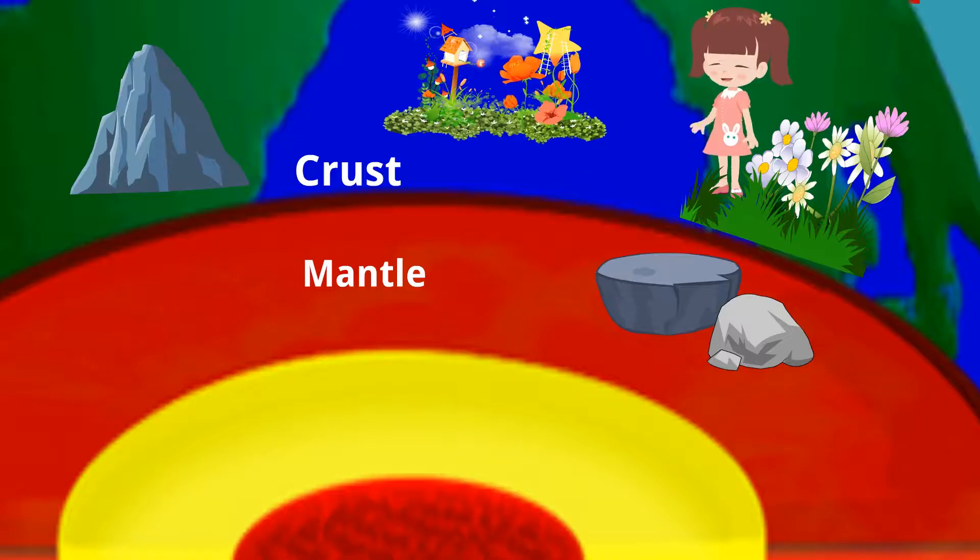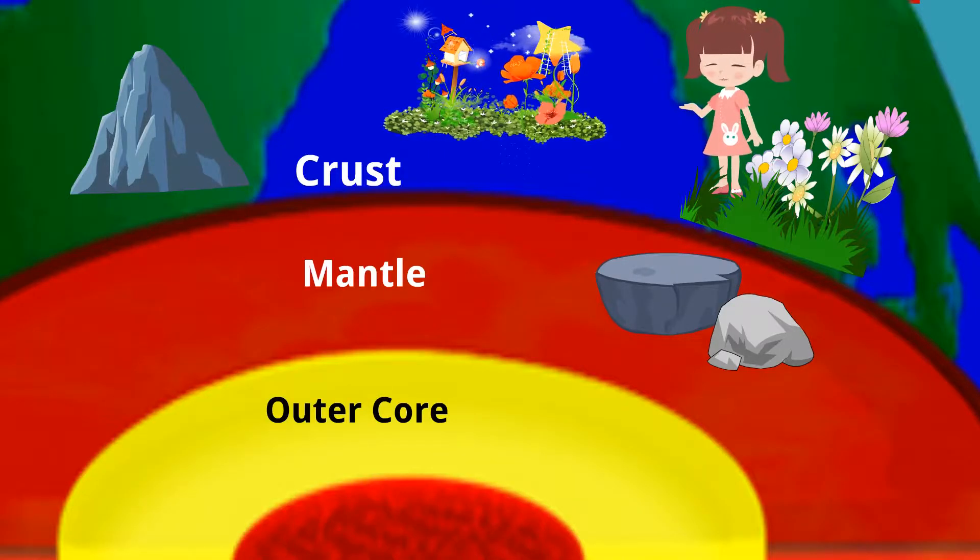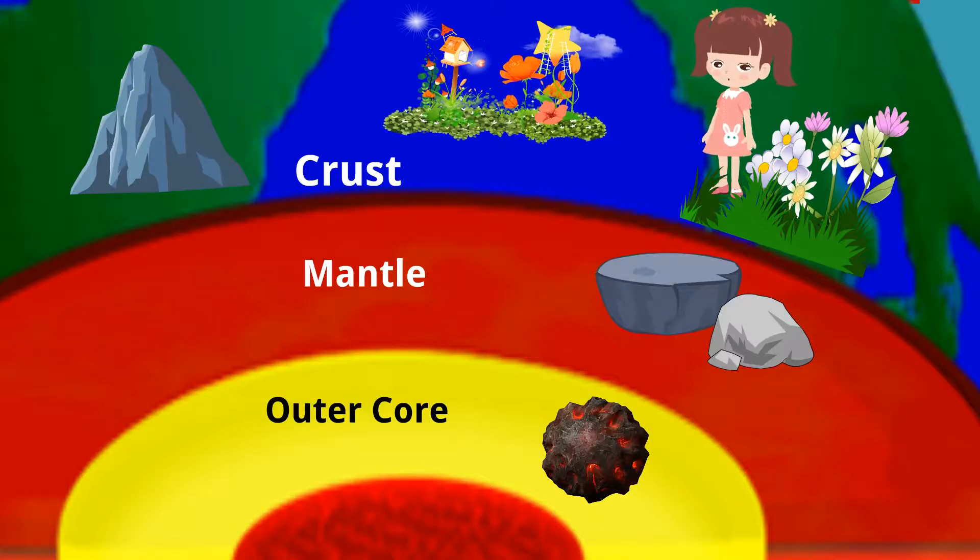Under the mantle lies the outer core. This is made of hot liquid rocks of iron and nickel.